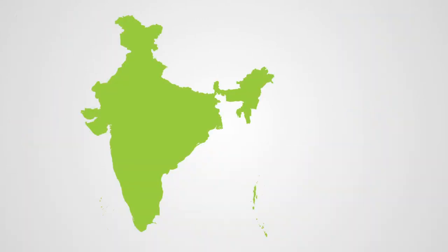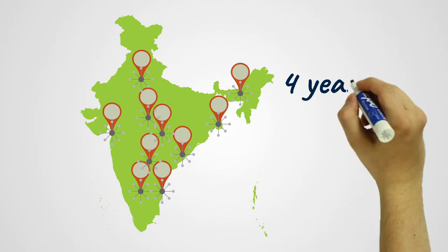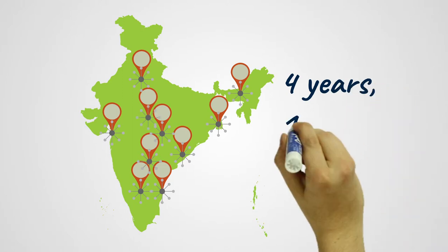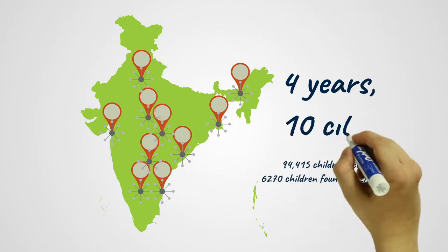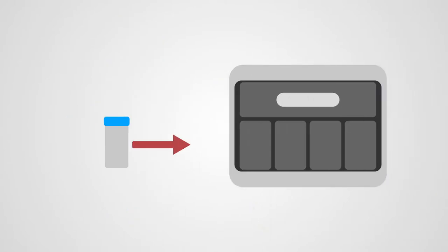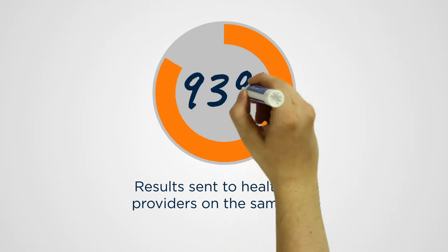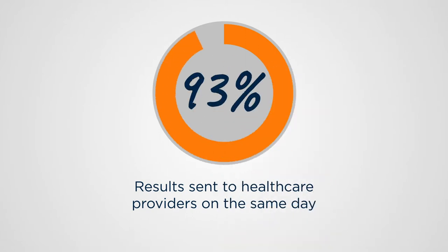In collaboration with RNTCP, FIND introduced a test for children that can be conducted on both sputum and non-sputum samples. It quickly and reliably identifies tuberculosis and whether it's a strain that is treatable with common antibiotics.